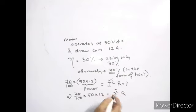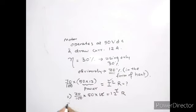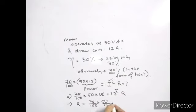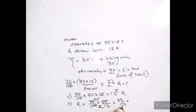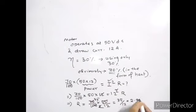One factor of 12 cancels from both sides. So R equals 70 by 100 times 50 divided by 12. Simplifying: 50 over 100 gives one-half, and 70 over 2 is 35; so R equals 35 by 12, which is approximately 2.917 ohms.